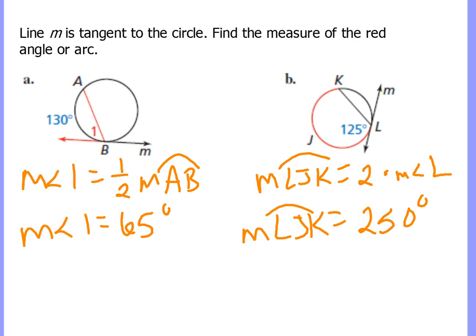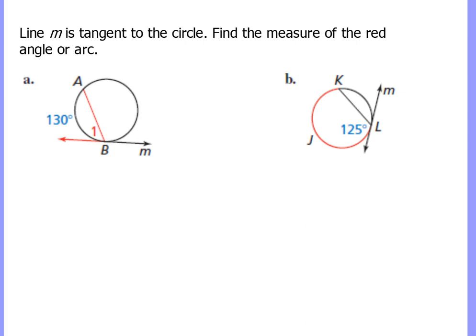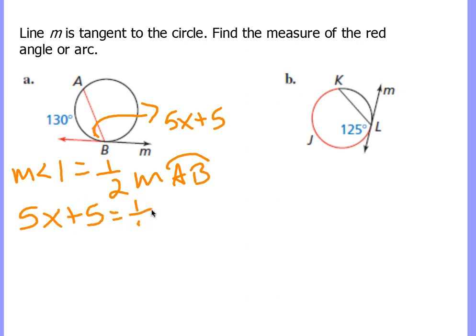So what if we went ahead and took it into a different context as well? What if we said, what if I called angle 1, five x plus five, and now we want to use the same kind of concept here? Well, remember the measure of angle 1 is equal to half the measure of arc AB. Same concept here, just substitute what we know: half of 130 and five x plus five equals 65.